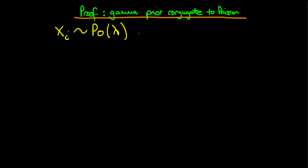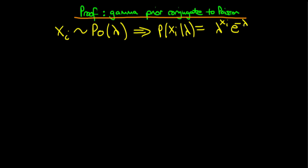What does that mean? Well, it means that we can write down the probability distribution for this likelihood. So we've got the probability of Xi given lambda is equal to lambda to the power Xi times e to the power minus lambda, all divided through by Xi factorial. So that's the likelihood.